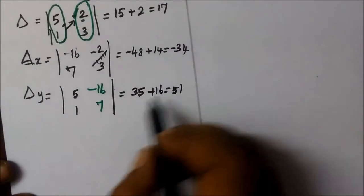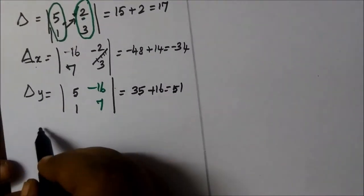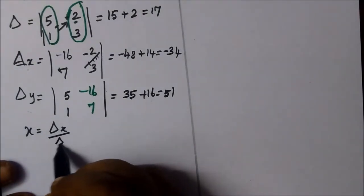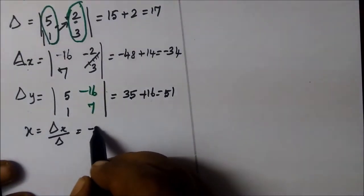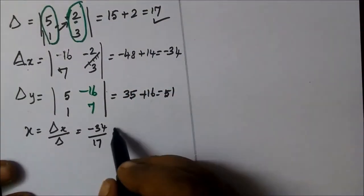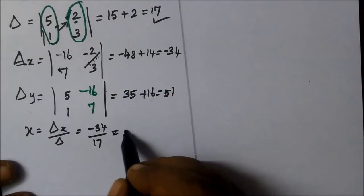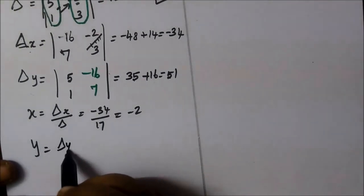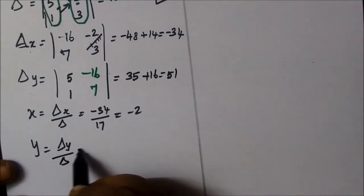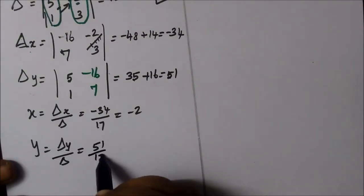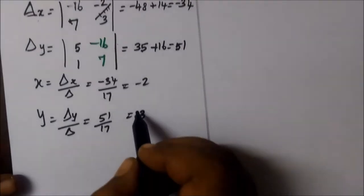So, the formula is del x by delta. So, minus 34 by 17. Delta is the same as it is. So, equal to minus 2.